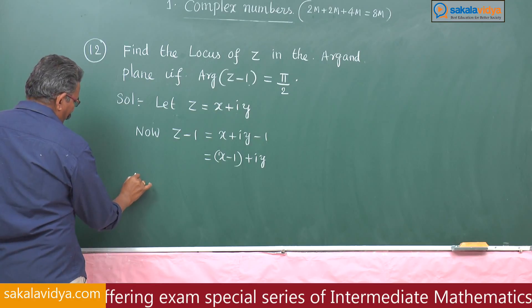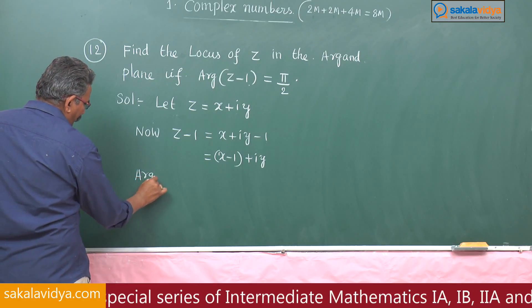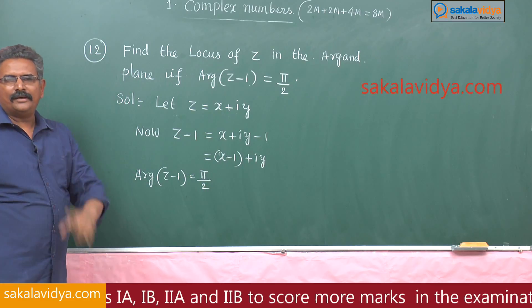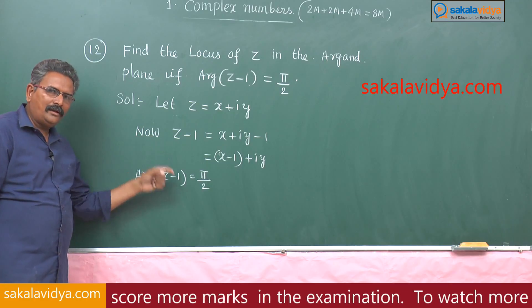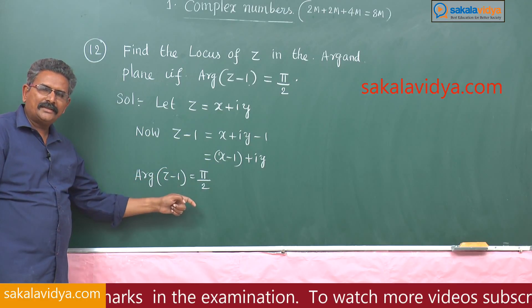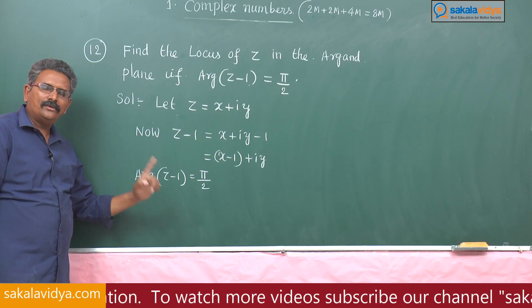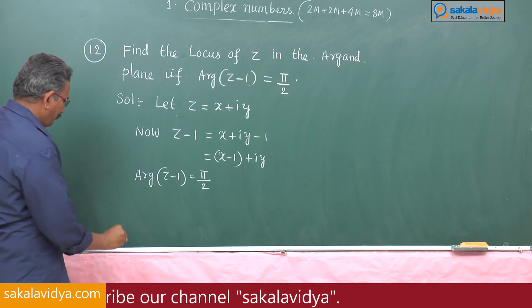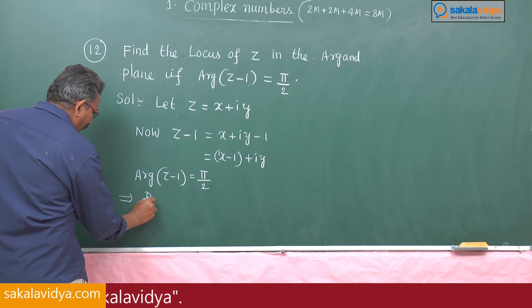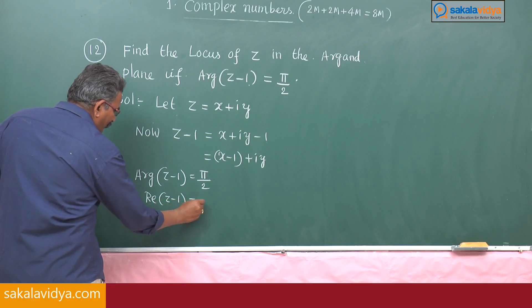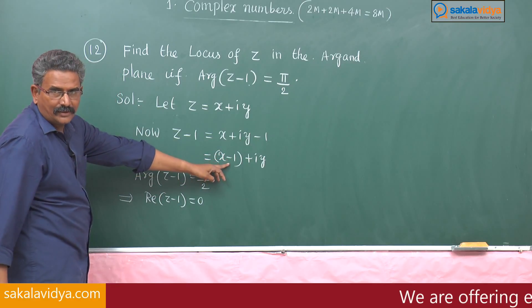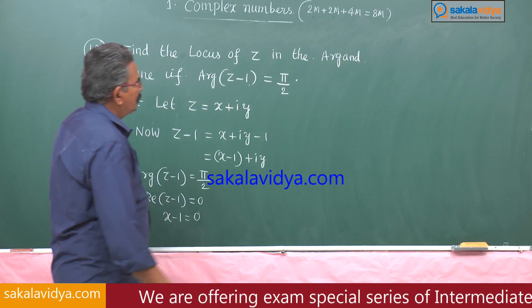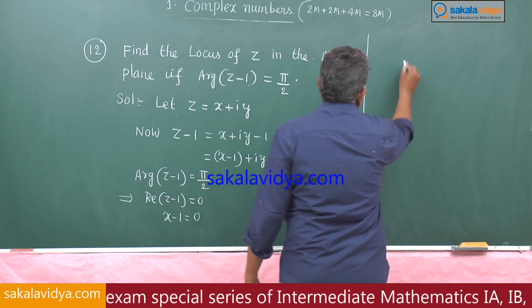What is given here: argument of z minus 1 is equal to π/2. Always remember, if the argument of any complex number is 90 degrees, that is possible only when the real part of that complex number is 0. So that implies the real part of z minus 1 should be 0. The real part is x minus 1, so x minus 1 equals 0, giving x equals 1.